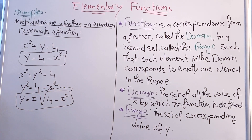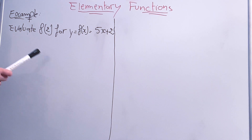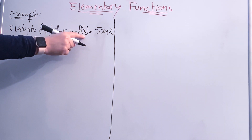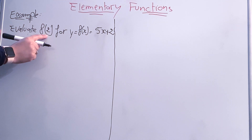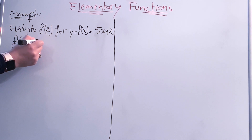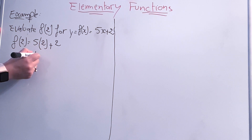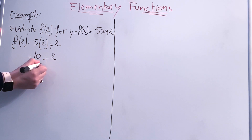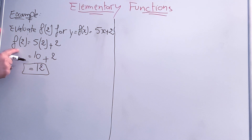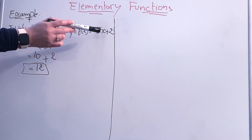Now let's see how we evaluate a number in a function. For example, we have the function f(x) equal to 5x plus 2. We need to evaluate at x equals 2. We replace x with 2: f(2) equals 5 times 2 plus 2, which equals 10 plus 2, so f(2) equals 12. In general, when asked to evaluate a number in a function, we just replace x with that number.